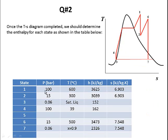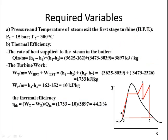The T-S diagram of the cycle is now complete. We have all the state information, especially the entropy values. For the required variables: the pressure and temperature of the steam exiting the first stage turbine are 15 bar and 300°C respectively.